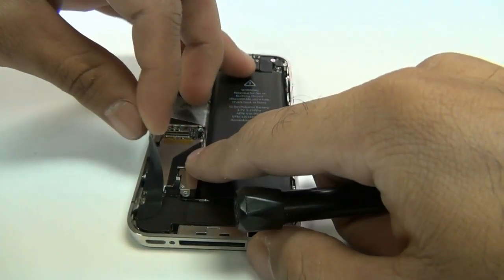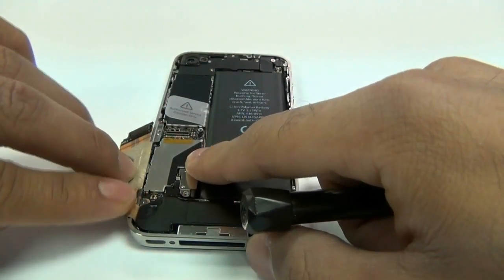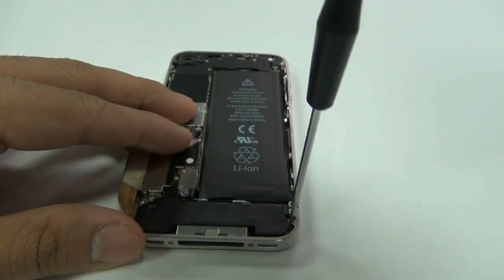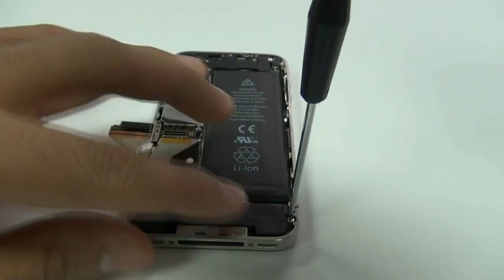Using your fingers or a safe open pry tool, disconnect the dock connector flex ribbon. Sometimes it is held in by a little adhesive that is a little hard, so you will have to pull it back gently.